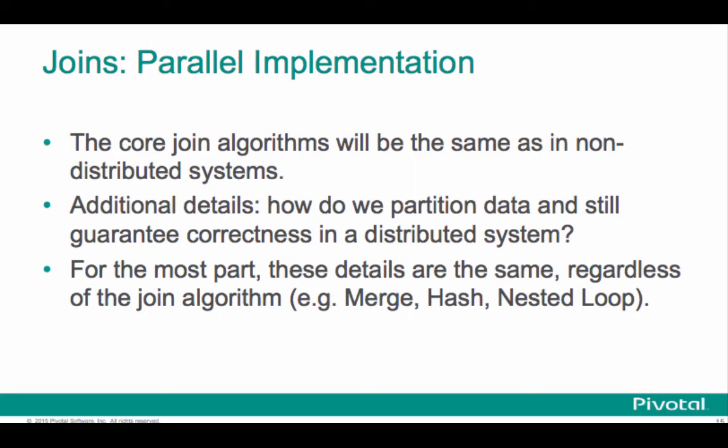If we look at joins, we've got how the joins are implemented in a parallel database system like Greenplum. We've got a parallel implementation. The core join algorithms themselves are going to be the same as in a non-distributed system. But we have the additional detail of how do we partition the data and still guarantee correctness in this distributed system. For the most part, regardless of the algorithm, whether it's a merge, a hash, or a nested loop join, these details are going to be the same in this parallel environment as they are in a typical non-parallel database.